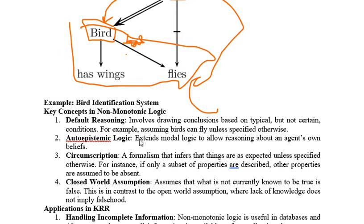The next concept is auto-epistemic logic, which extends modal logic to allow this kind of reasoning. Then there is circumscription: we concluded that birds can fly without knowing about penguins. Without the extra information about penguins, we concluded birds can fly and assumed that concluded information was correct and proven — that is circumscription.